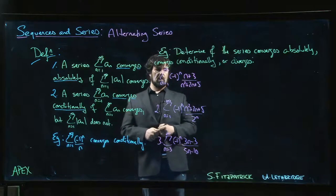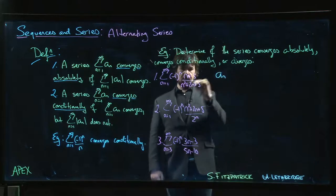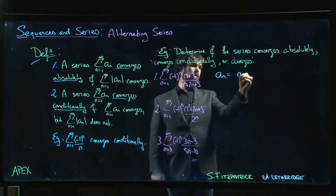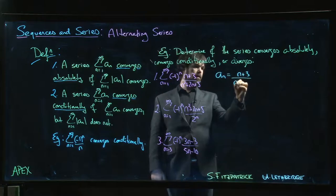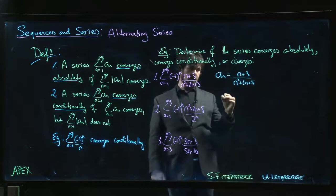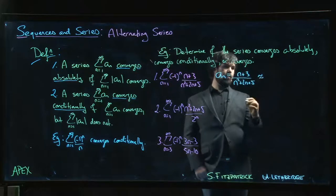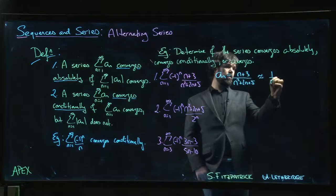Looking at the first one, if we look at our terms a_n = (n+3)/(n²+2n+5), we might notice that those are approximately 1/n for n large.